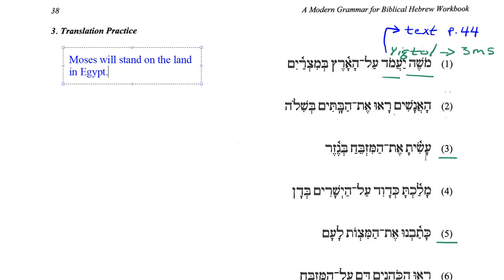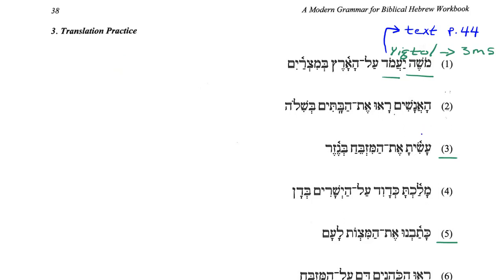Let's look at number three. We have: asita et hamizbeach b'gezer. Note that my accent is above the second-to-last syllable: asita et hamizbeach b'gezer. Now to figure this one out, we're going to look at the chart on page 56 of the textbook.